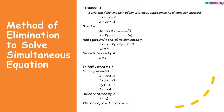We move on to the elimination method. For the elimination method, the aim is to eliminate one of the variables so we have just one variable left, and that way we can easily solve for the remaining variable.